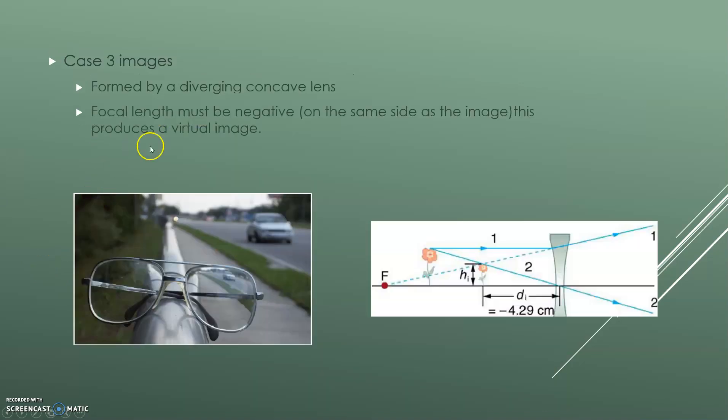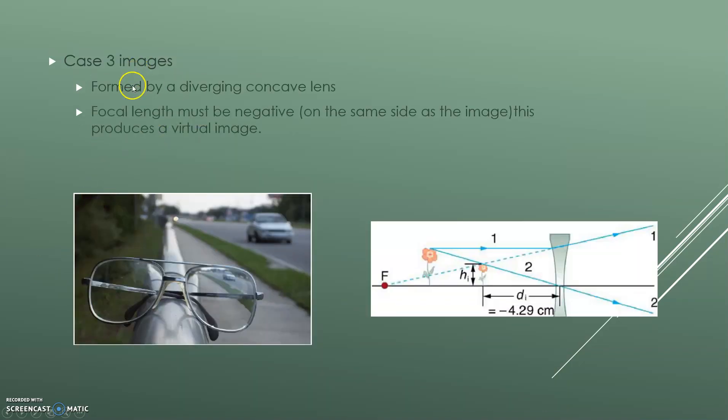Case three images are formed by diverging concave lenses. The focal length must be negative, so it must be on the same side as the image. This produces a virtual image as well. And you can see here, this is your normal glasses. They look like they're old, normal glasses.